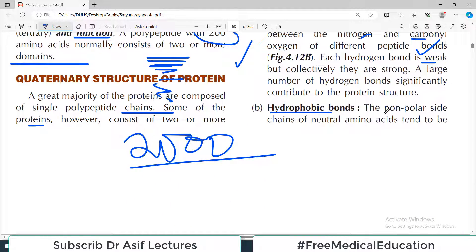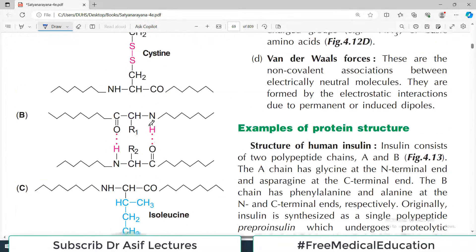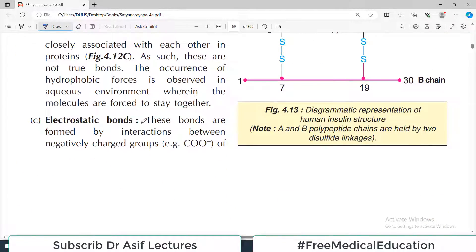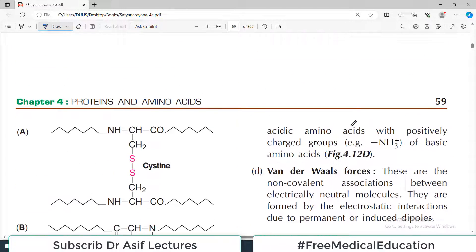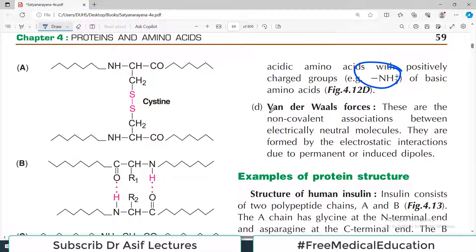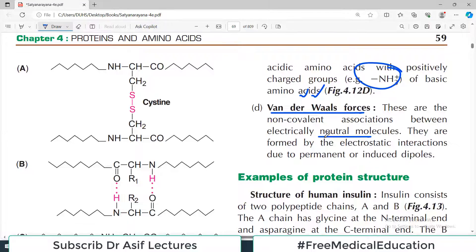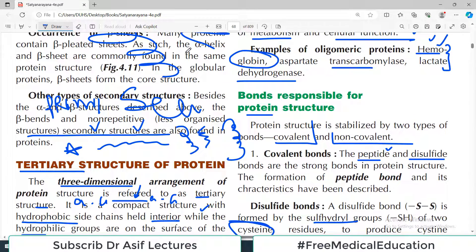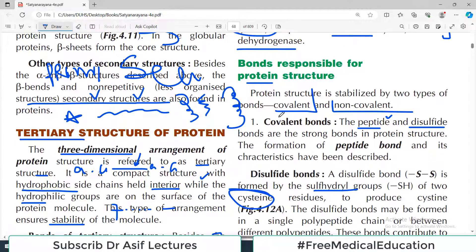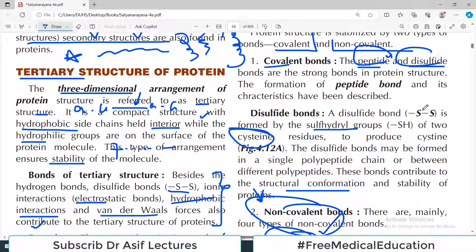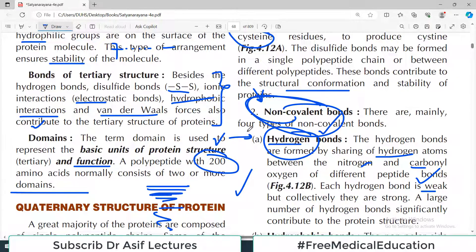Then there are hydrophobic bonds, another example of non-covalent bonding. The nonpolar sidechains of neutral amino acids tend to be attracted to each other by these particular bonds. Then there are electrostatic bonds between the negative charge which is the carboxylic acid group and the positive charge which is the amino group. Then there are Van der Waals forces - they happen between electrically neutral molecules. They are also weak bonding patterns but overall they make good strength to the structure.